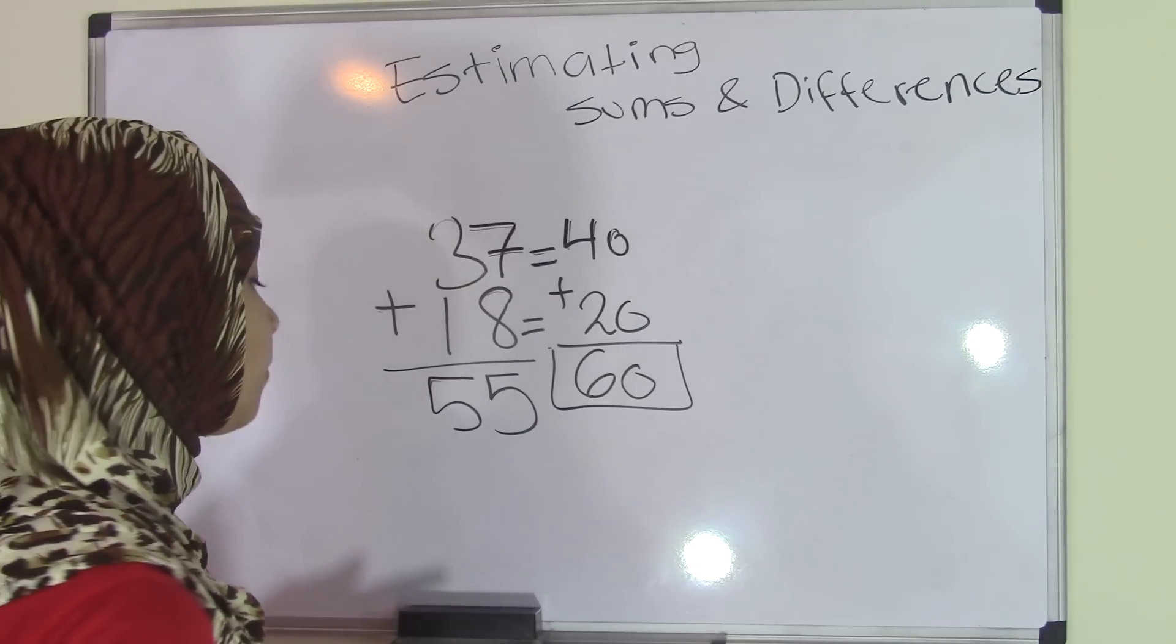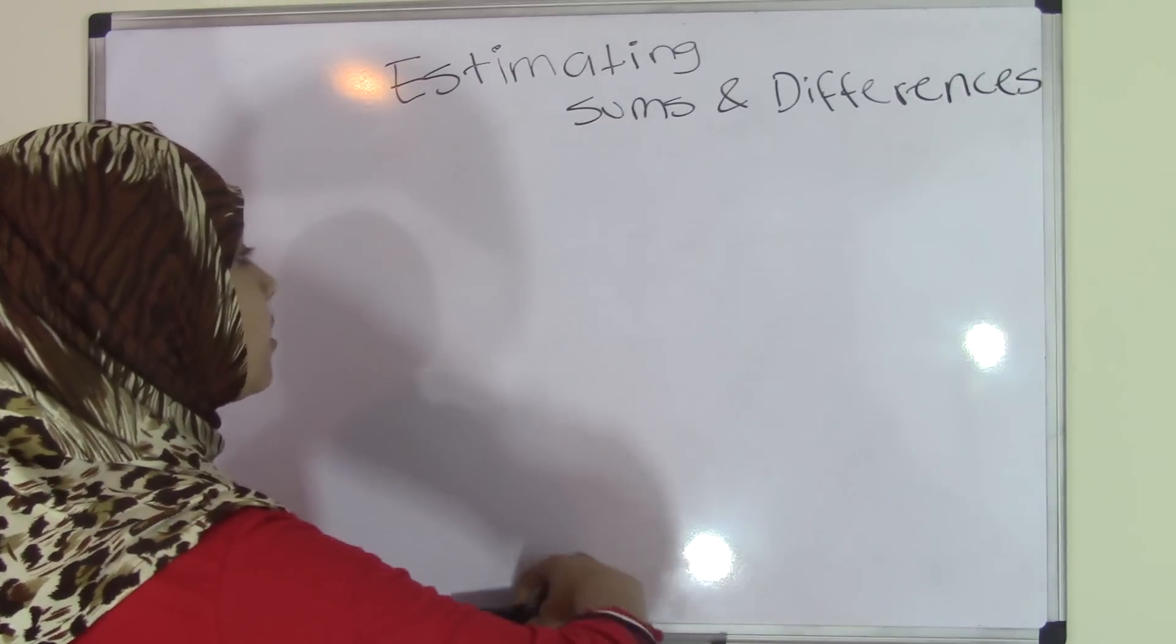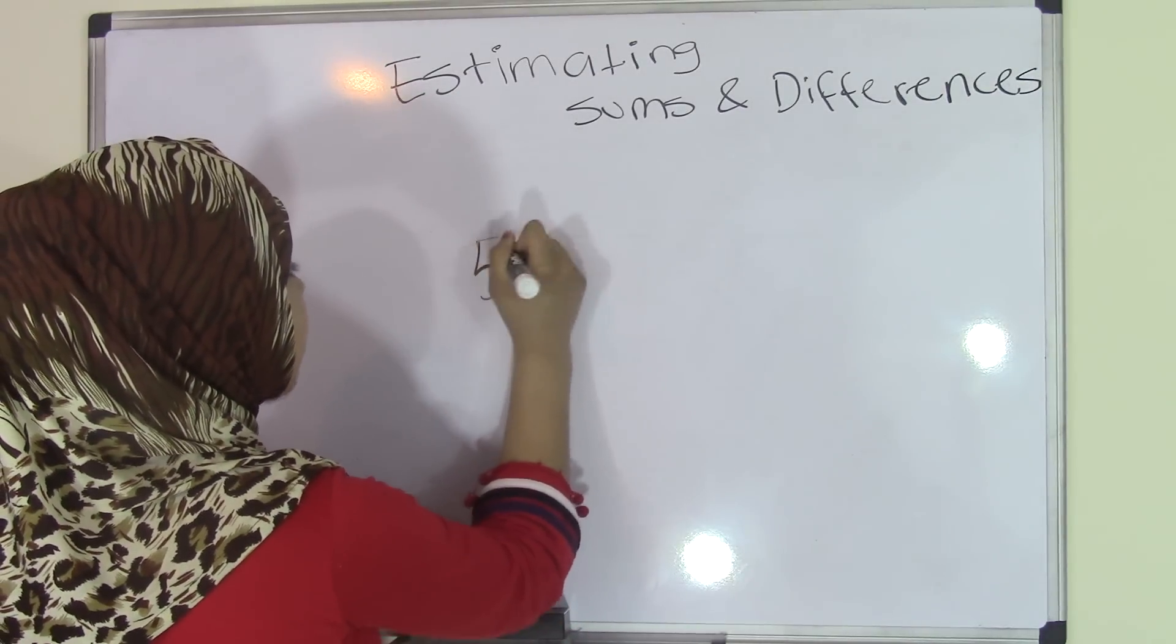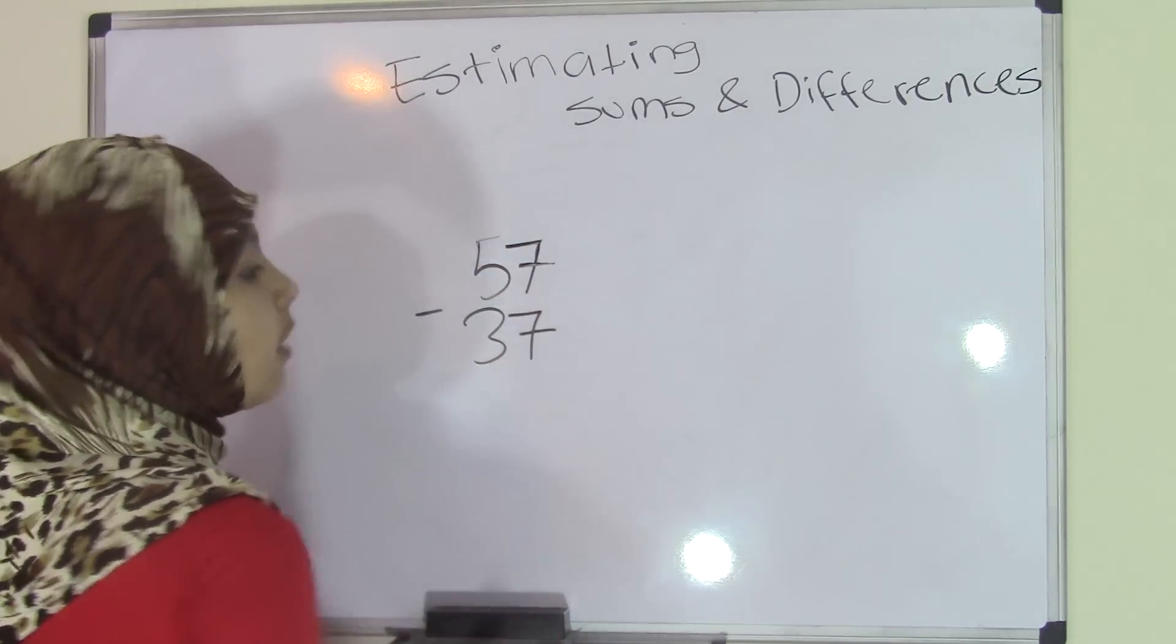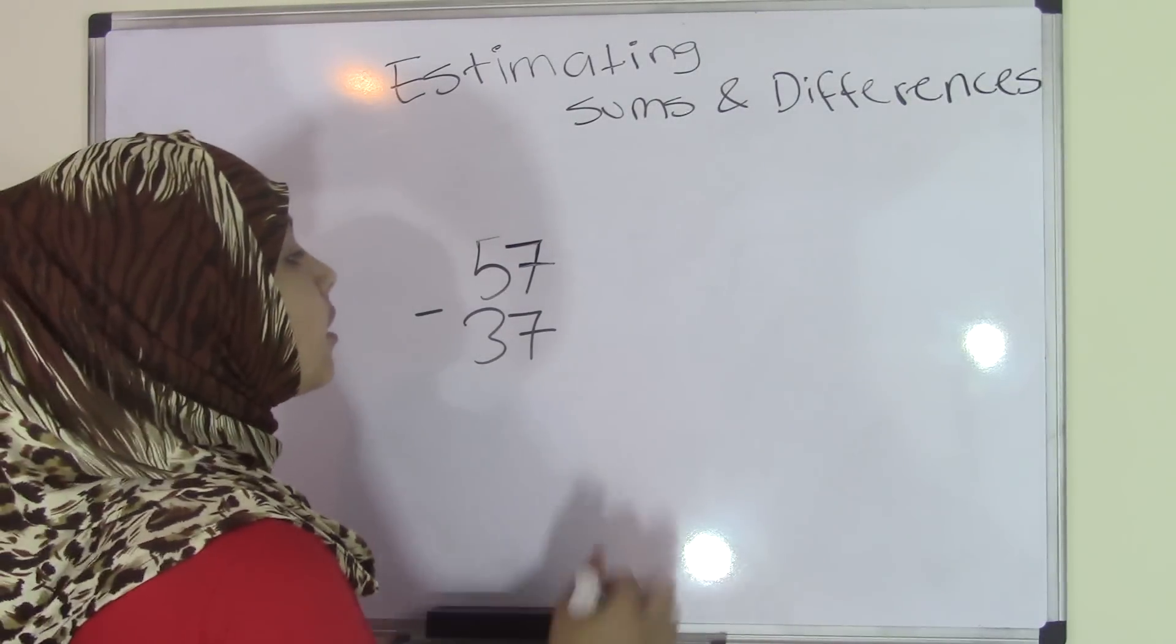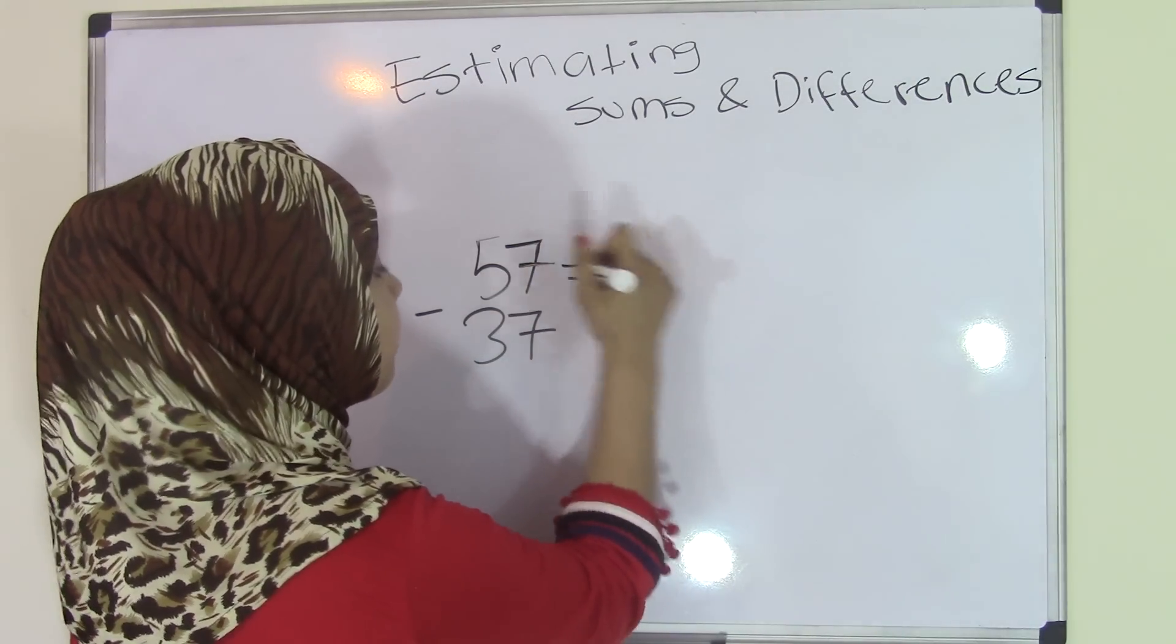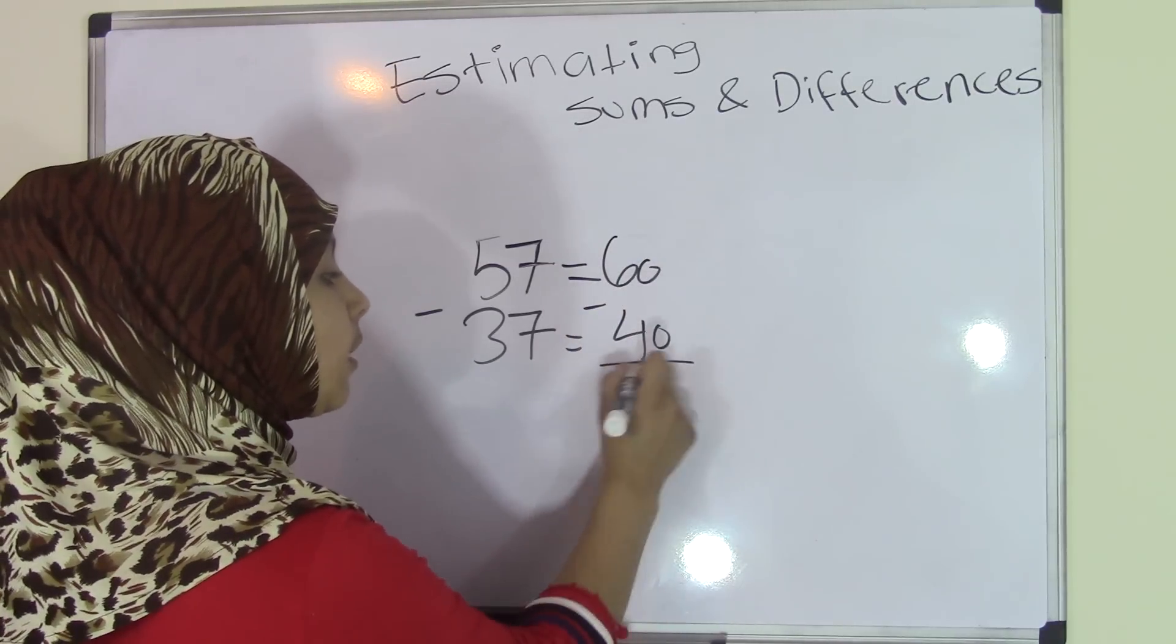Now, let's move on to a problem that involves differences. So let's say we have 57 minus 37. You will follow the same steps. You will round this to the nearest tens place. So 57 equals 60, 37 equals 40. 60 minus 40 equals 20.